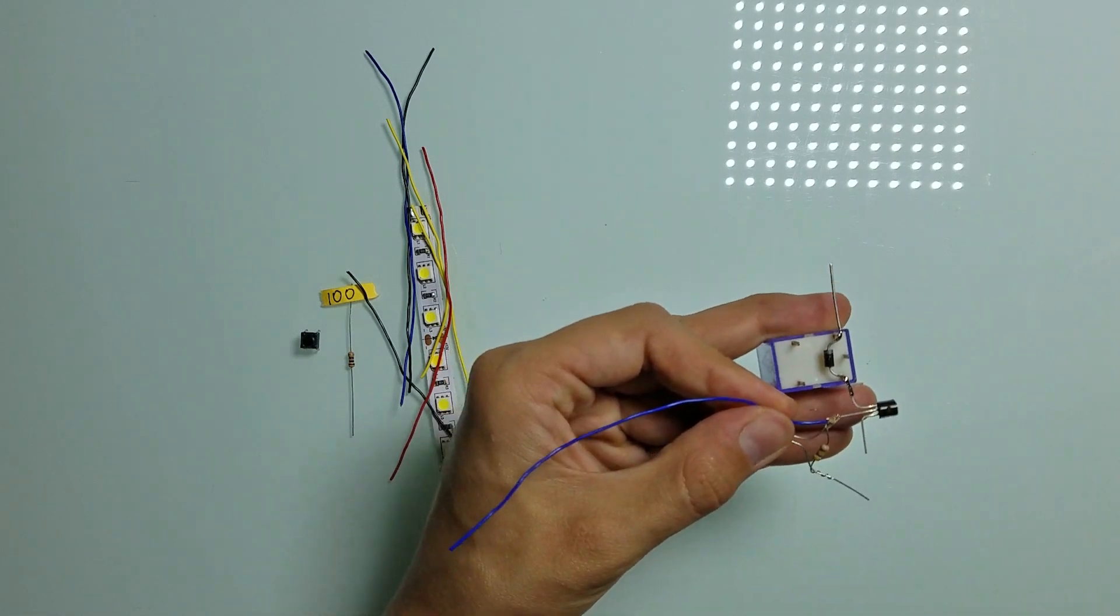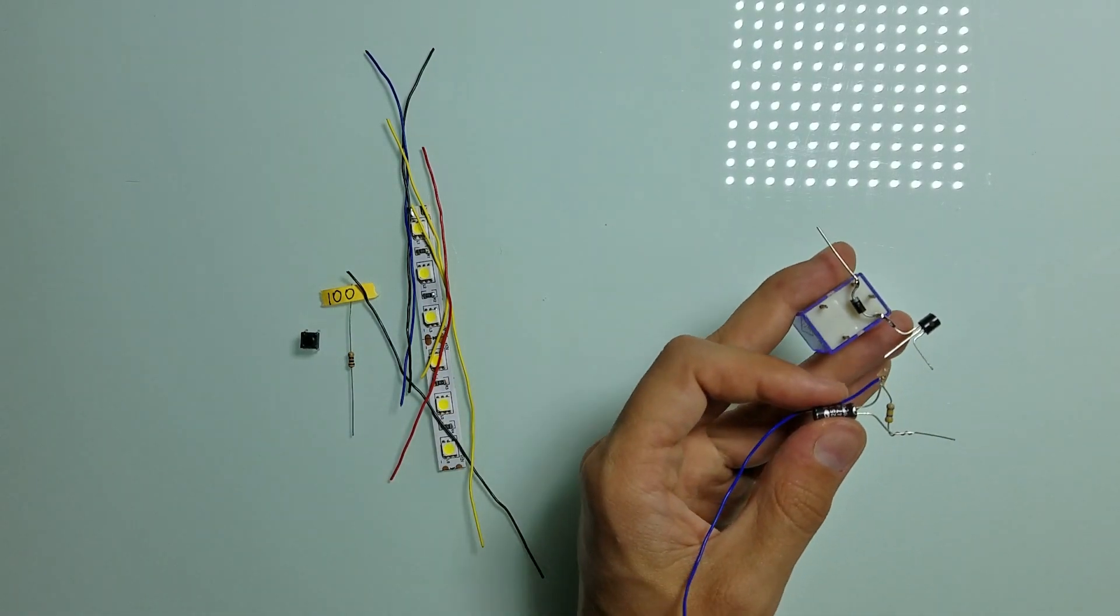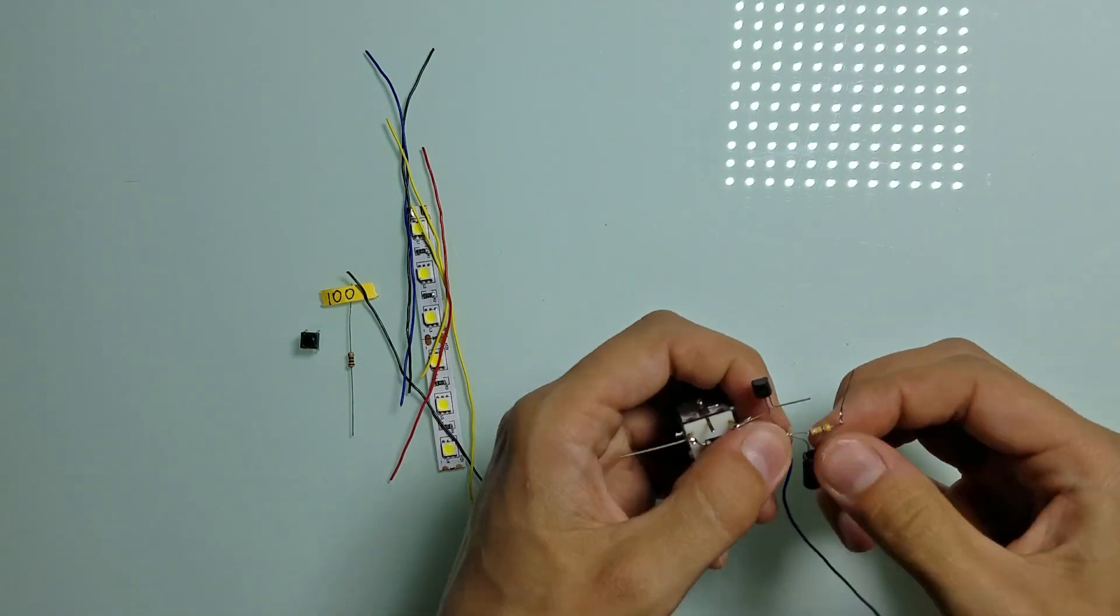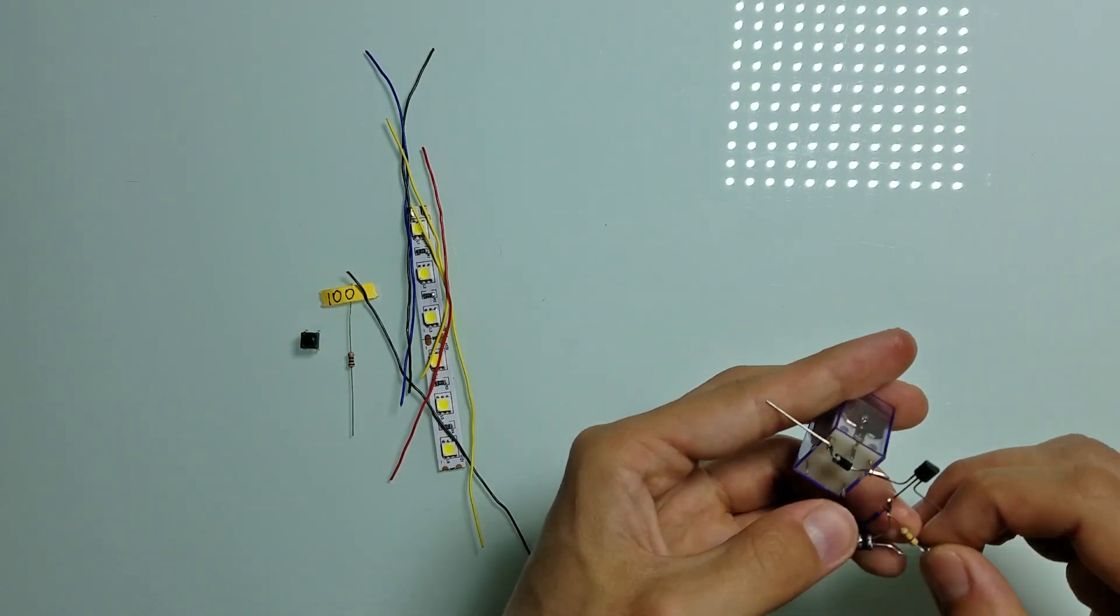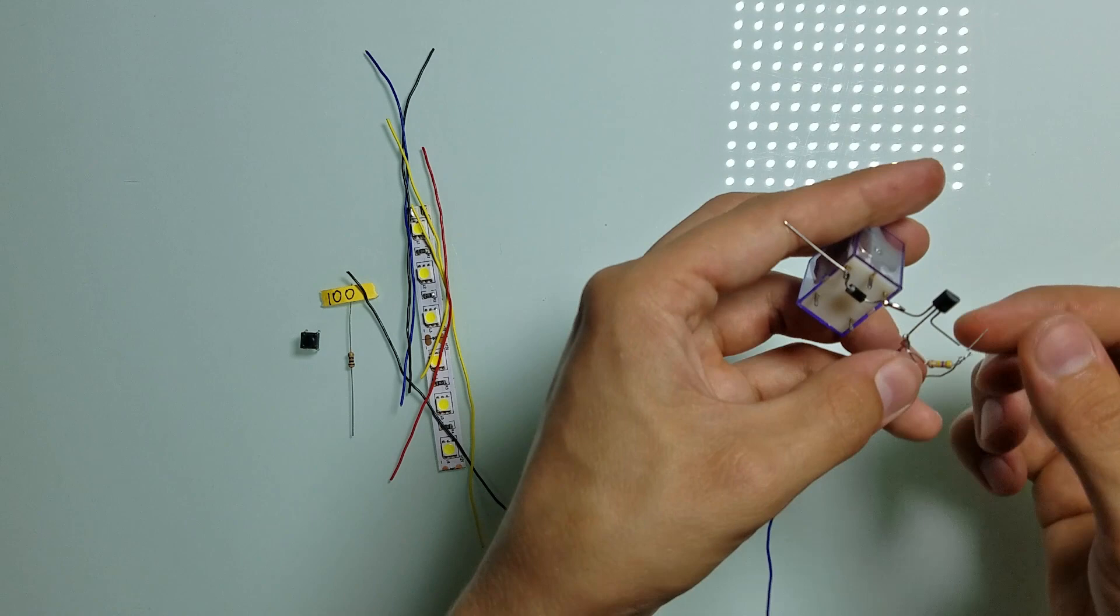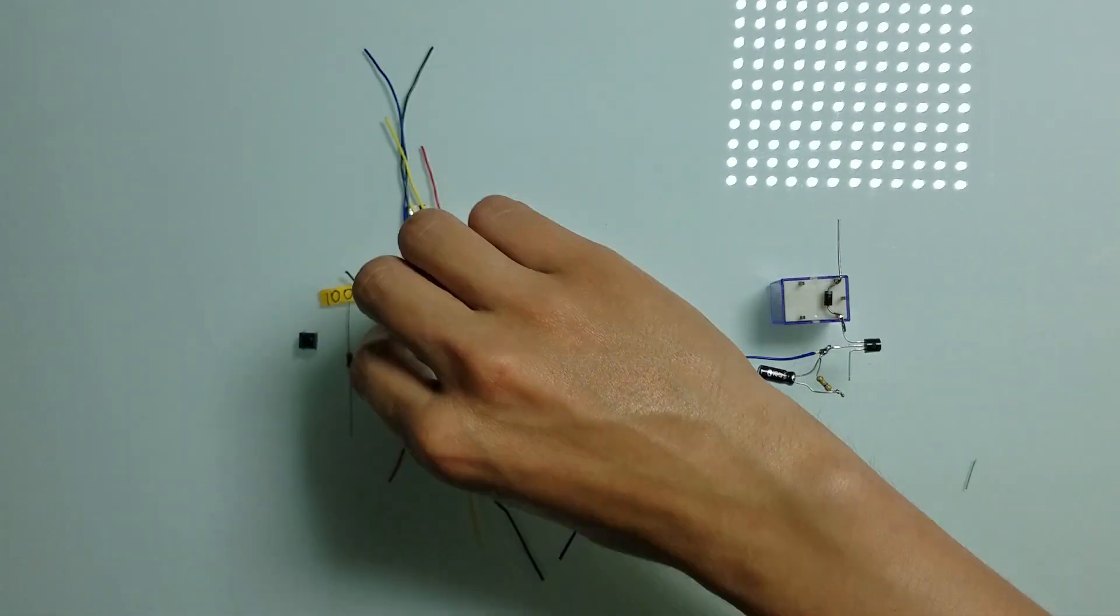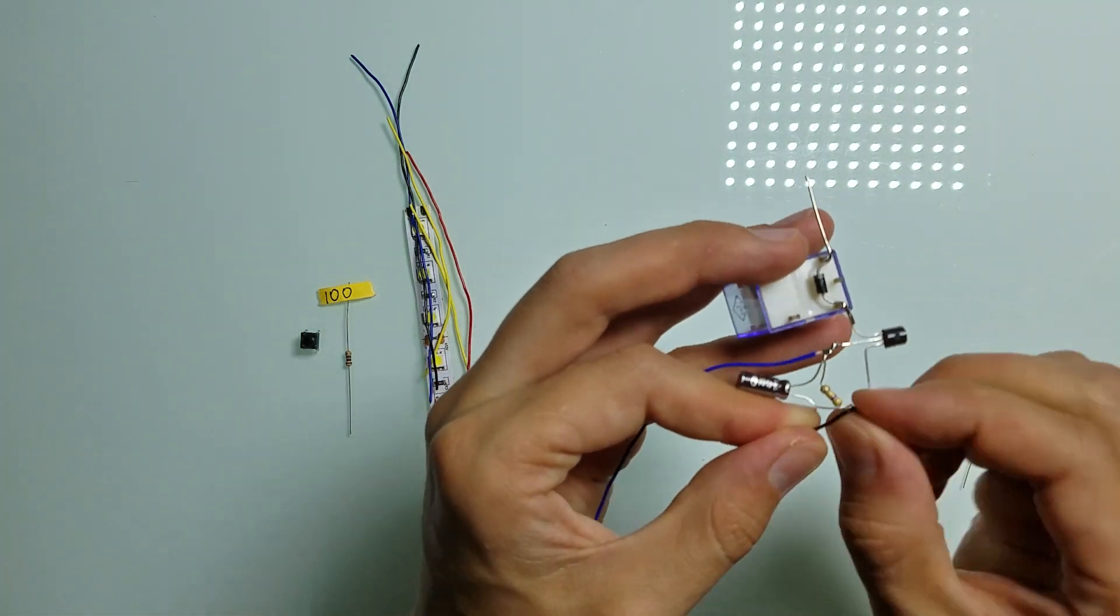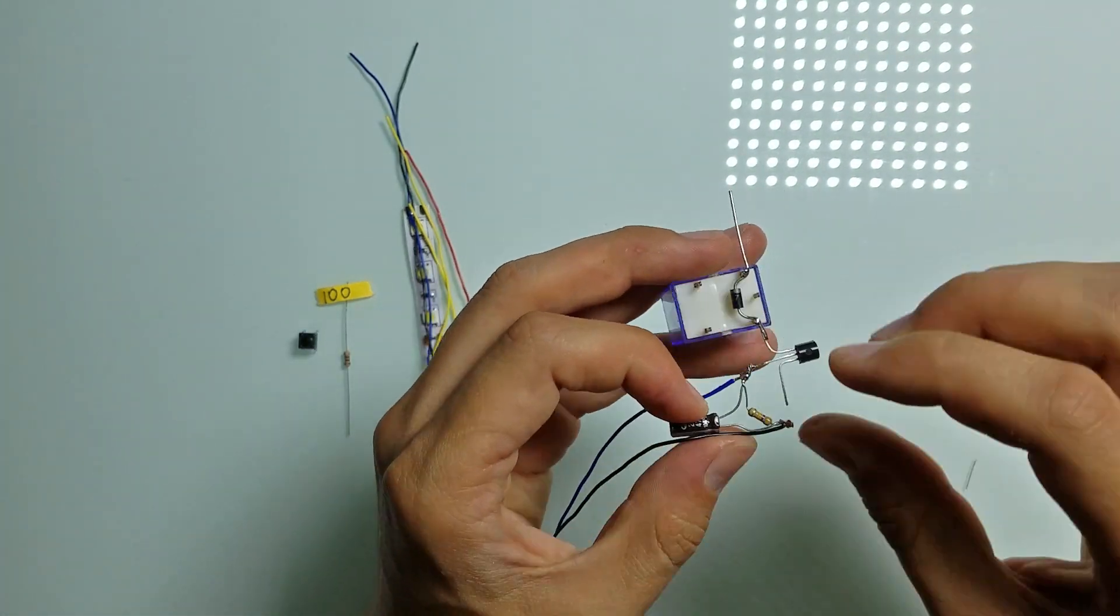Now let's solder the wire and the positive lead of the capacitor to the gate lead of the MOSFET. After it's done, let's connect a black wire to the negative lead of the capacitor and then solder it to the source lead of the MOSFET.